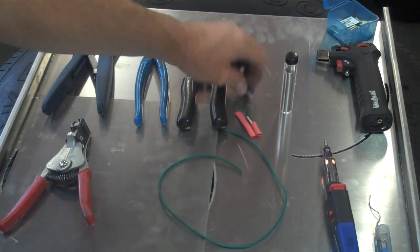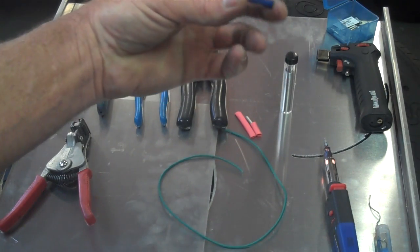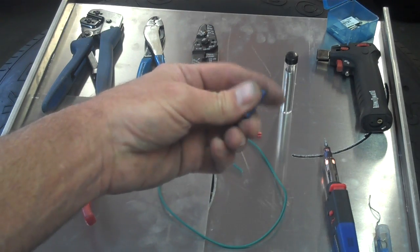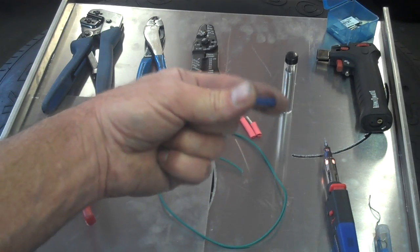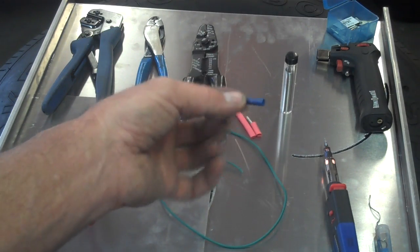There's solder. This is an insulated type terminal, a butt connector, which means that it will butt two pieces of wire together. I really strongly recommend you avoid the use of this type of connector, and I'll show you why in a minute.